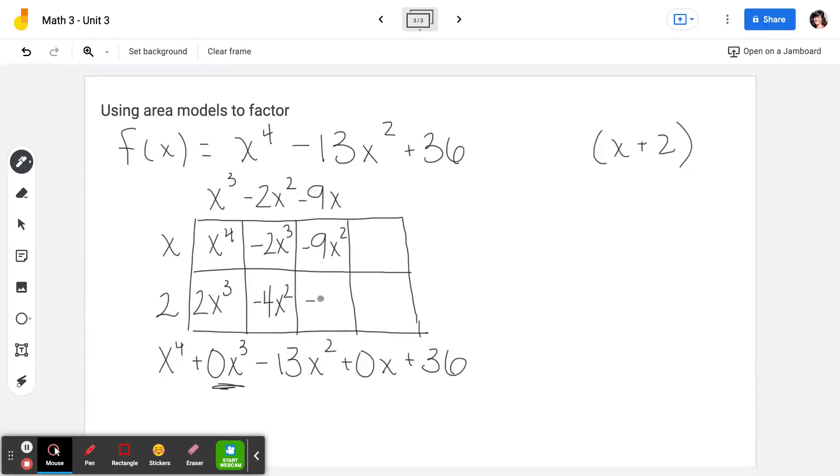Multiplying negative 9x by negative 2 gives us negative 18x. Again here, this x term is 0. So if this was negative 18x, this must have been positive 18x, leaving us with an 18 up here.